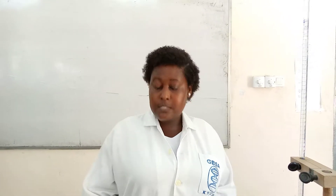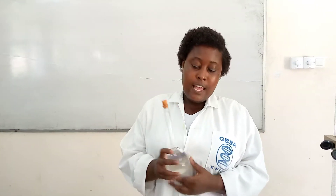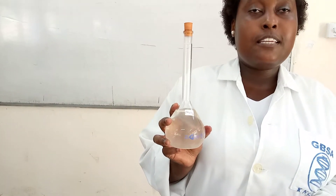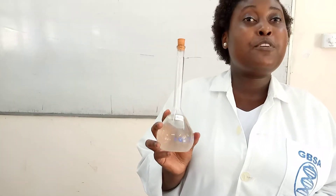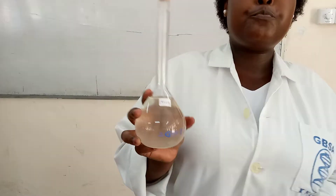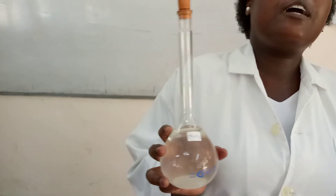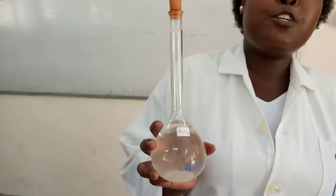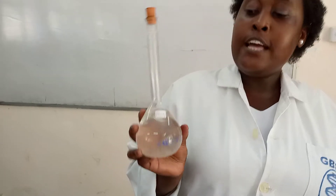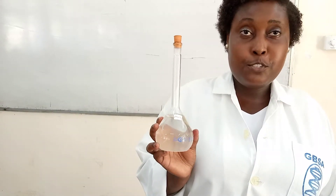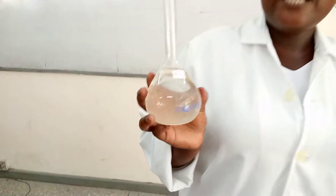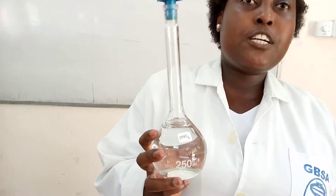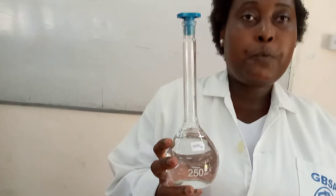This is my sodium carbonate. I have already prepared it, using the previous calculation on preparation of solute from solute. I followed the steps that I wrote on the board and I used it to prepare my sodium carbonate. And this is my nitric acid, already prepared.